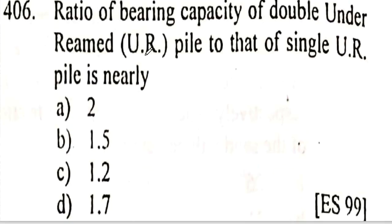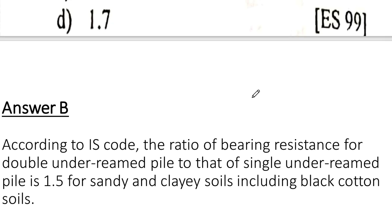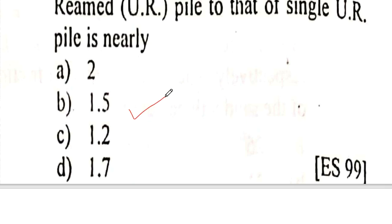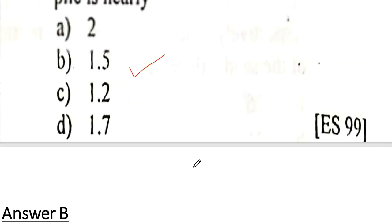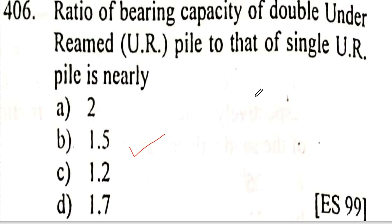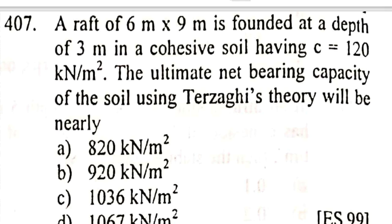Next: the ratio of bearing capacity of a double under-reamed pile to that of a single under-reamed pile. According to IS code provisions, this ratio is 1.5 times for both sandy and clay soils, including black cotton soil. So option B (1.5 times) is correct.